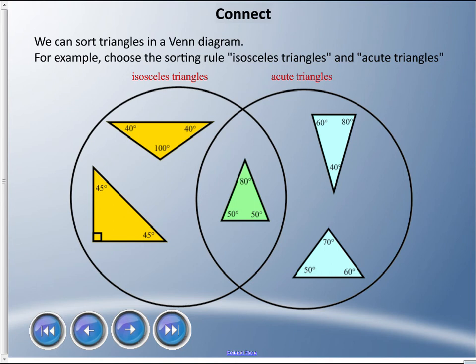Now what we can do with these triangles, we can sort them in a Venn diagram. A Venn diagram, if you don't know, compares two things and we see what they have in common and what they have as differences. I made one up about isosceles triangles and acute triangles. The left loop there is all the isosceles triangles, the right side is all the acute triangles, and in the middle they're both isosceles and acute.